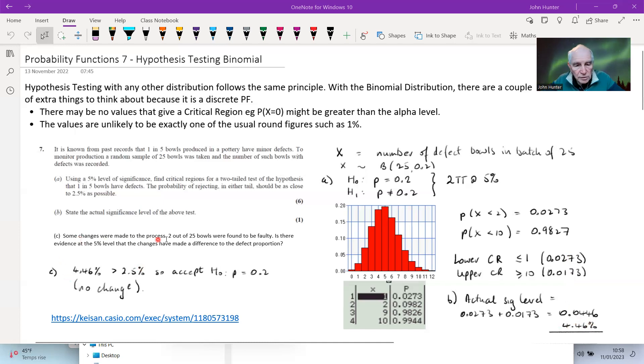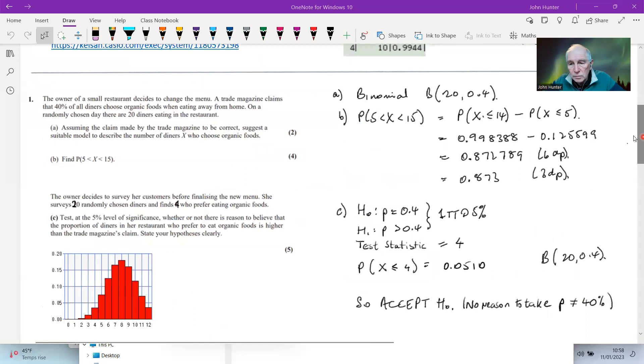Then he goes on to say, some changes were made to the process. Two out of 25 bolts were found to be faulty. Is there evidence of 5% that changes have made a difference to the defect proportion? Well, if we've got 2, then 2 is actually not falling into our critical region. So therefore, we're just going to accept the null hypothesis. We've got everything teed up for that test, and then we actually took the observation that 2 out of 25, we knew straight away that it wasn't going to be in the critical region.